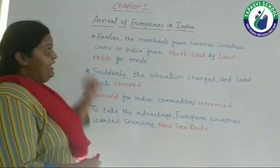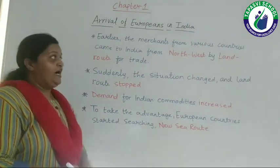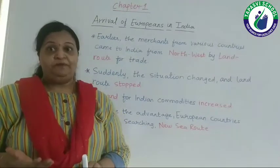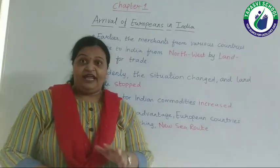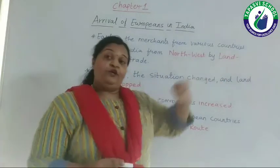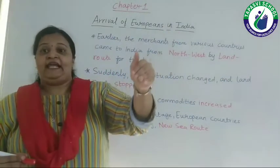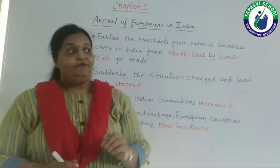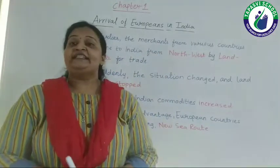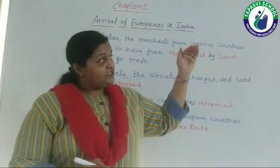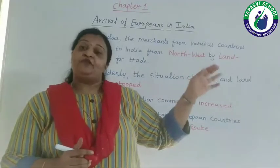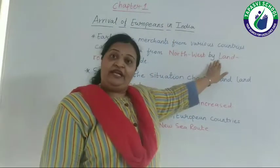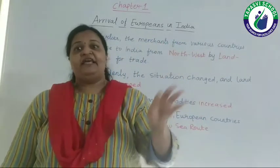Earlier, merchants from various countries came to India from the North-West via land boundary. They were crossing the land boundaries and coming to India for trade. If we look at the world map, we know that Europe and Asia are two continents connected via land boundary. So from Europe, via connecting through the Arab countries, it was easier to come to India via the North-West. For years, European traders came to India via land routes.